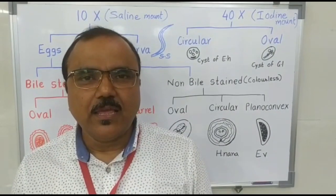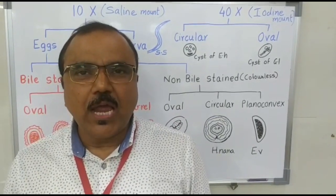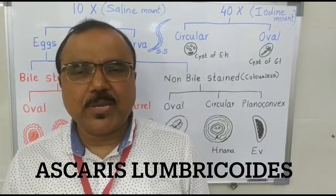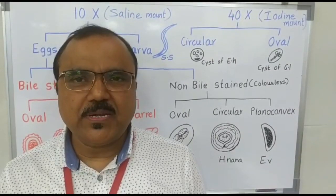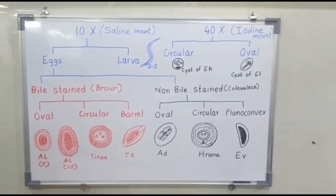The interpretation is as follows. This is bile stained egg in saline mount, which is oval in shape and rough surface, suggestive of eggs of Ascaris lumbricoides. Similar interpretation to be given to the other eggs.